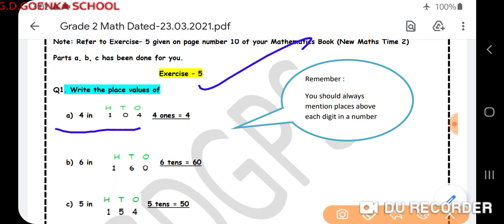You have to write the place value of the digit in the given number. For example, here the question is write the place value of 4 in this number. So our first step will be to write ones, tens, and hundreds on the number. This tells us that 4 stands at ones place, so we will write 4 ones, that is equal to 4.